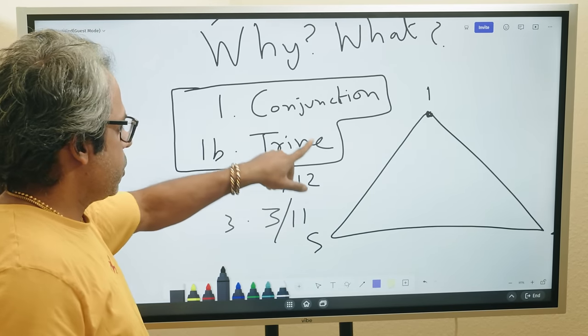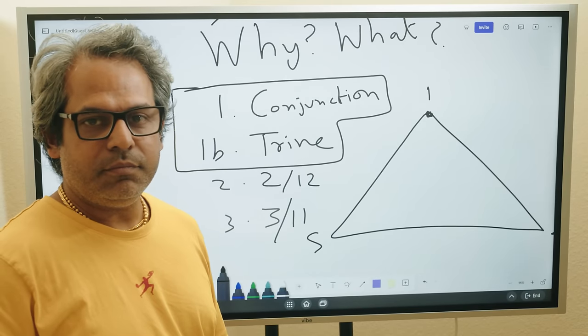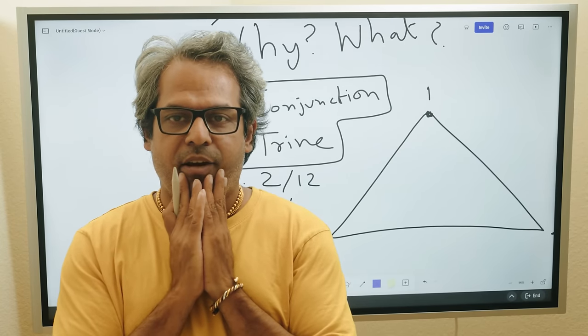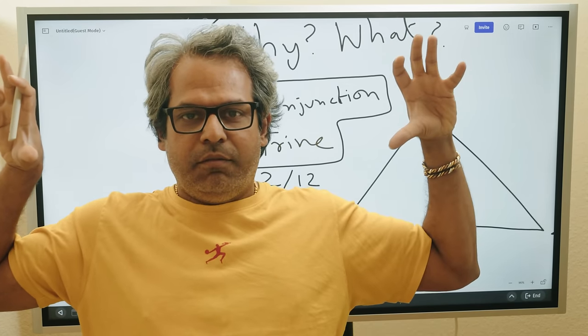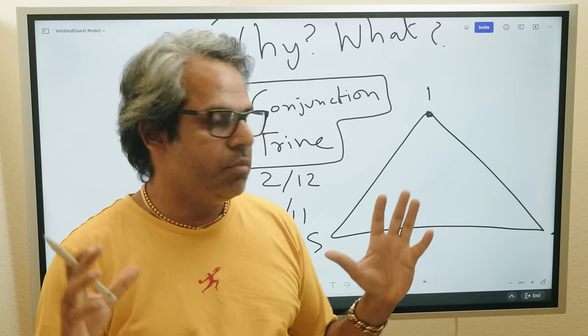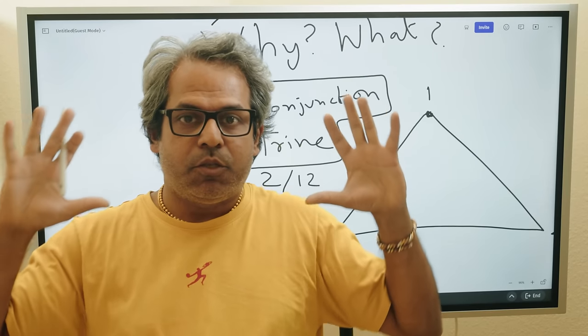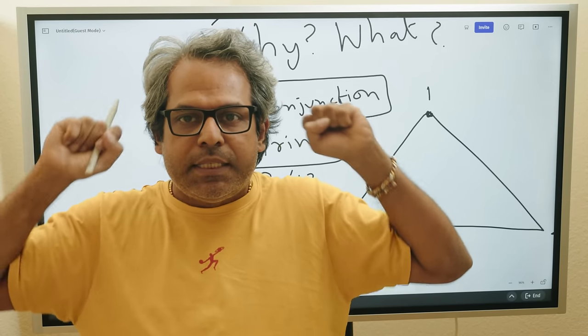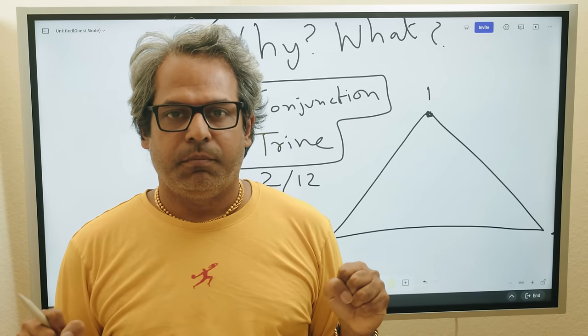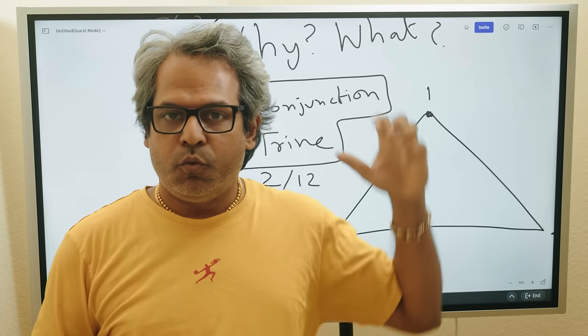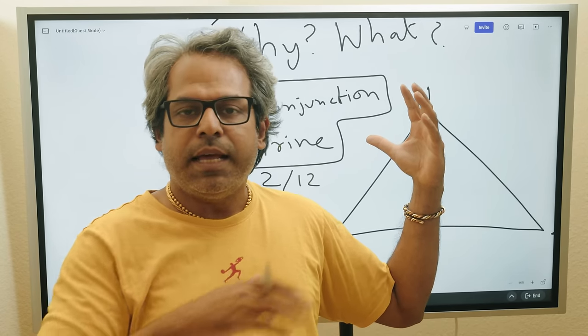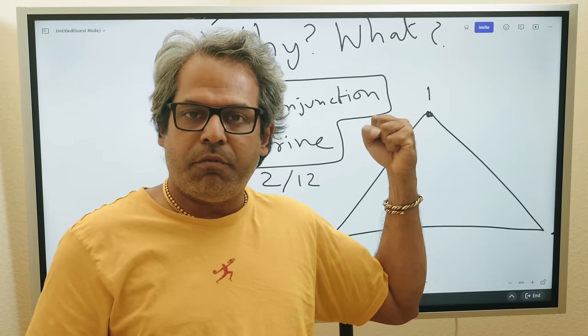If you master these two questions why and what, now you will start to see things come alive. When we say why and what, we're going to look for conjunctions and trine, then we're going to look for 2-12. Imagine I am Saturn, here's 2, here's 12. These are the planets that are surrounding me, this becomes my neighbors, my social circle.